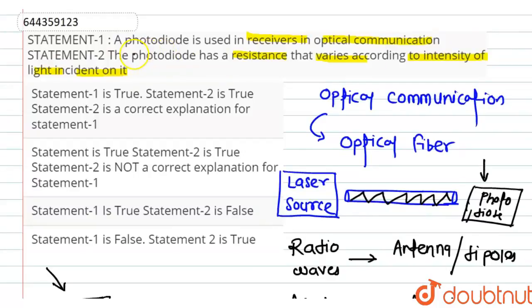It means here the statement one, that a photodiode is used in a receiver in optical communication, is true. And the reason that the photodiode has a resistance that varies according to the intensity of light incident on it is also true. But statement two is not a correct explanation for statement one. Therefore, option B will be the correct answer. Thank you.